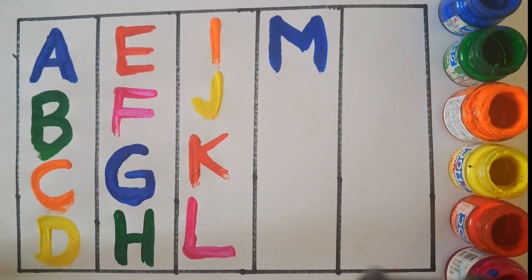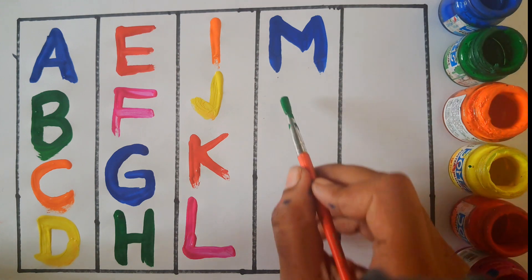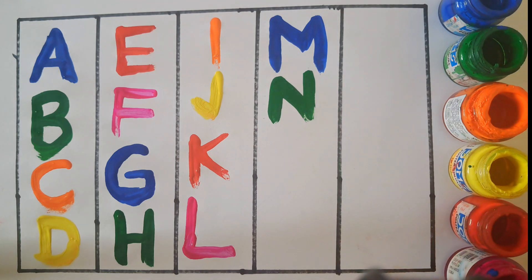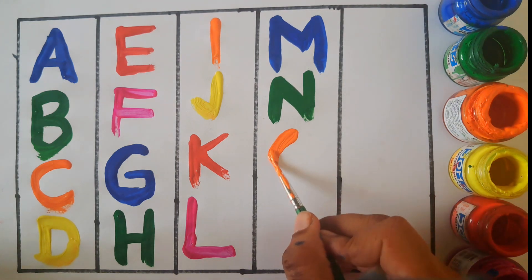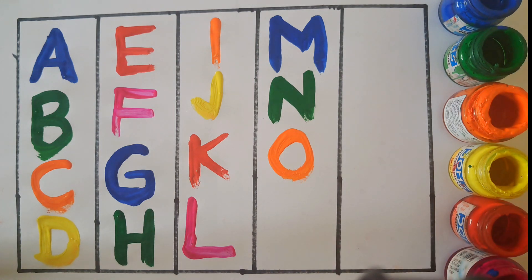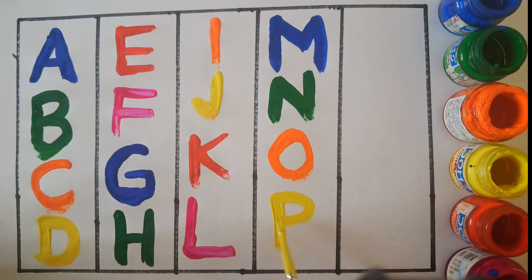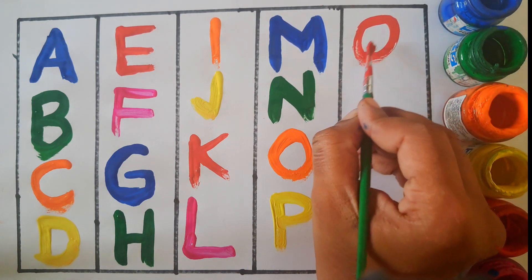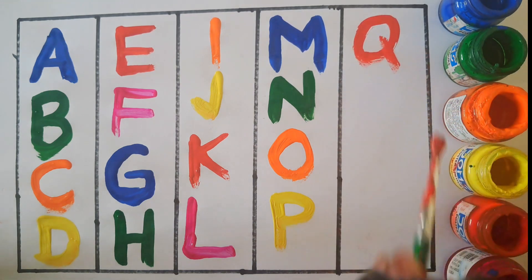M, M for Monkey. N, N for Nest. O, O for Owl. P, P for Parrot. Q, Q for Queen.